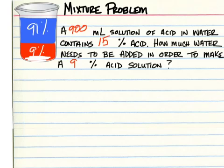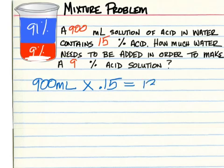So your first step in solving this is to do the following: find out how many milliliters of acid are in the container to start with. So that would be 900 multiplied by 0.15, which is 15%. 900 times 0.15 is 135 milliliters.